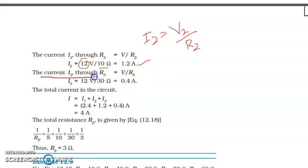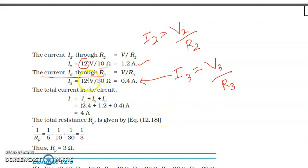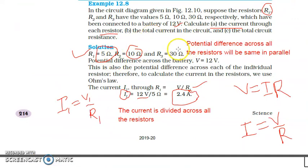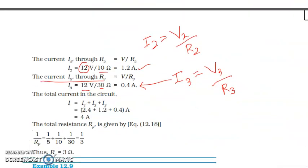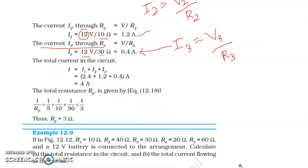Similarly, the current I3 through resistance R3 is I3 = V3/R3. V3 is again 12 volts and R3 is 30 ohm. So I3 = 12/30 = 0.4 ampere.